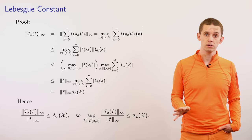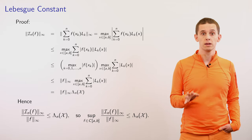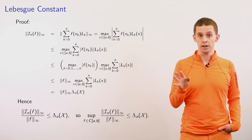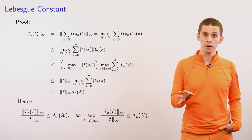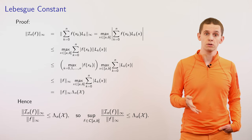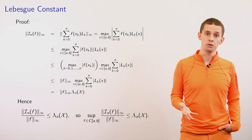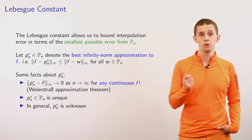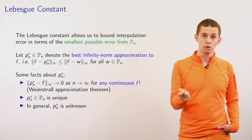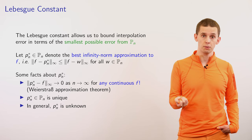Rearranging, the ratio of the infinity norm of In of f to the infinity norm of f is less than or equal to the Lebesgue constant. Since this holds for any function, the supremum of that ratio — the operator norm — is also less than or equal to the Lebesgue constant. We've established this result, and now we'll look at why it's relevant to polynomial interpolation error.